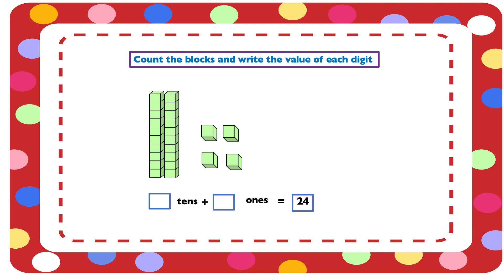One group of 10, another group of 10, that's 20. And then we have 1, 2, 3, 4. So we have 2 tens and 4 ones in 24. So the value of 4 is 4 ones and the value of 2 is 2 tens.